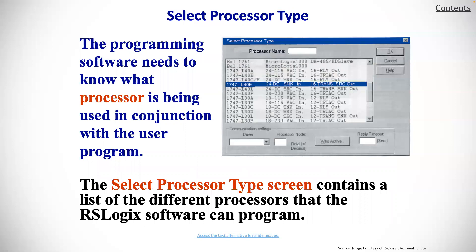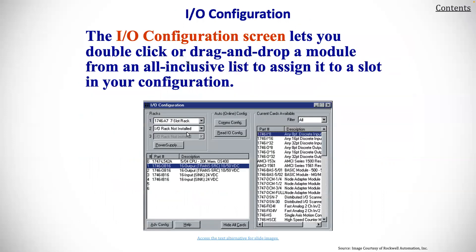You can select the processor type. The programming software needs to know what processor is being used in conjunction with the user program. The select processor type screen contains a list of the different processors that the RSLogix software can program. The I/O configuration screen lets you double-click or drag and drop a module from your all-inclusive list to assign it to a slot in your configuration.